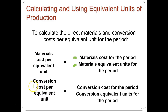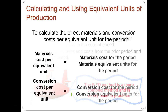For conversion costs — remember, conversion costs are the labor and overhead that convert materials into finished goods — we take the total conversion costs for the period and divide by the conversion equivalent units for the period. The conversion is the portion that won't be complete for items still in process at period end, since the labor and overhead aren't finished yet. Dividing gives us our conversion cost rate to use for allocation.